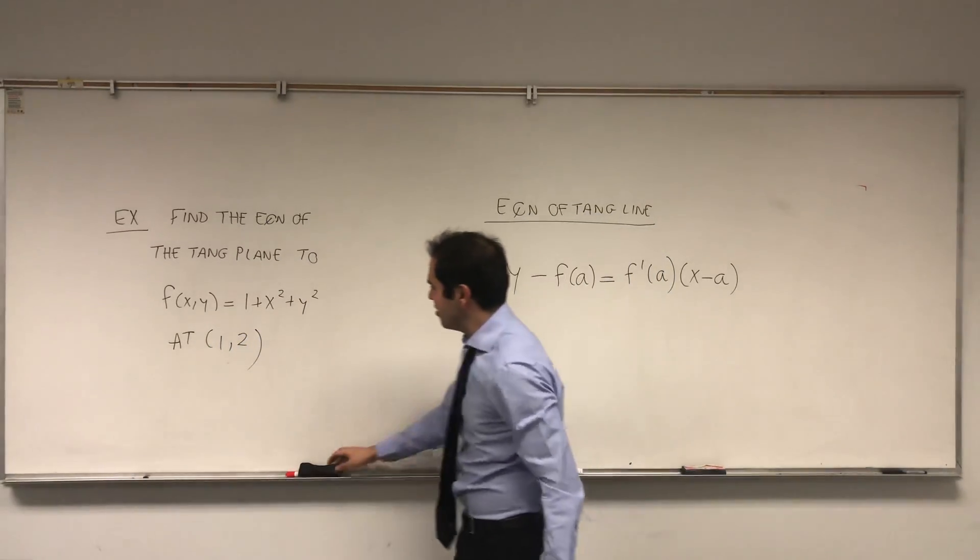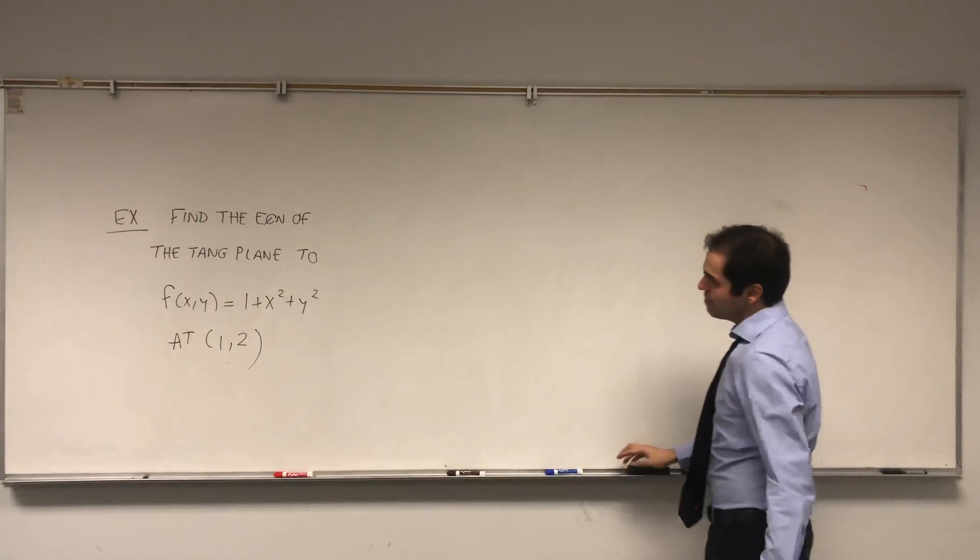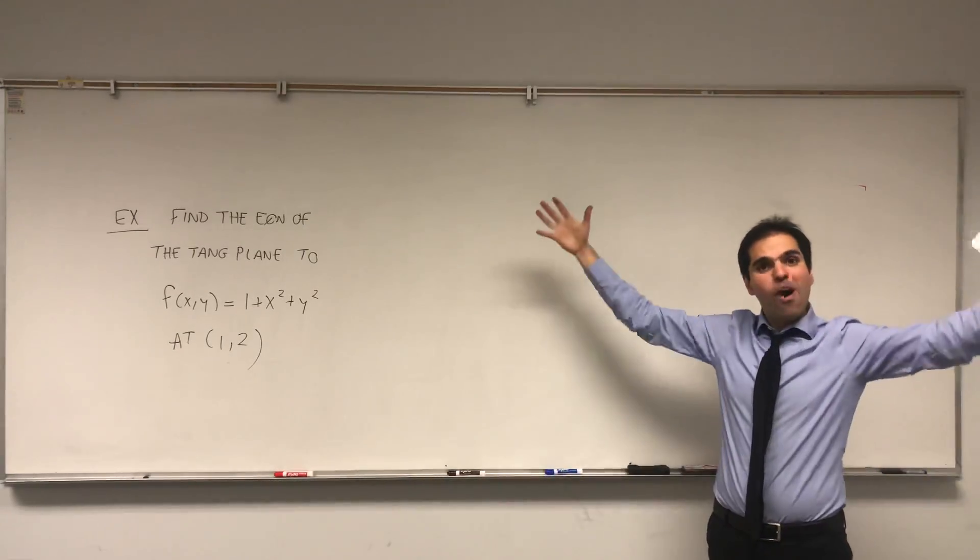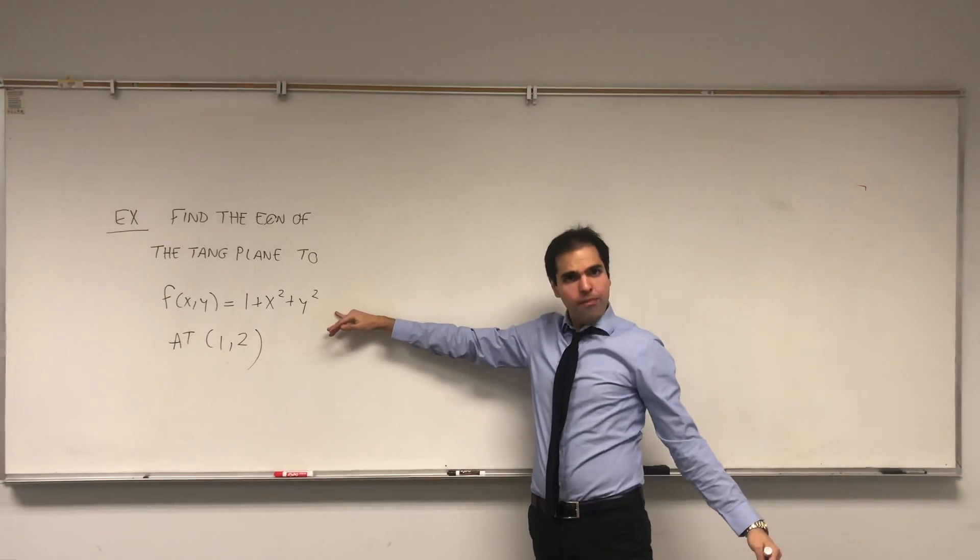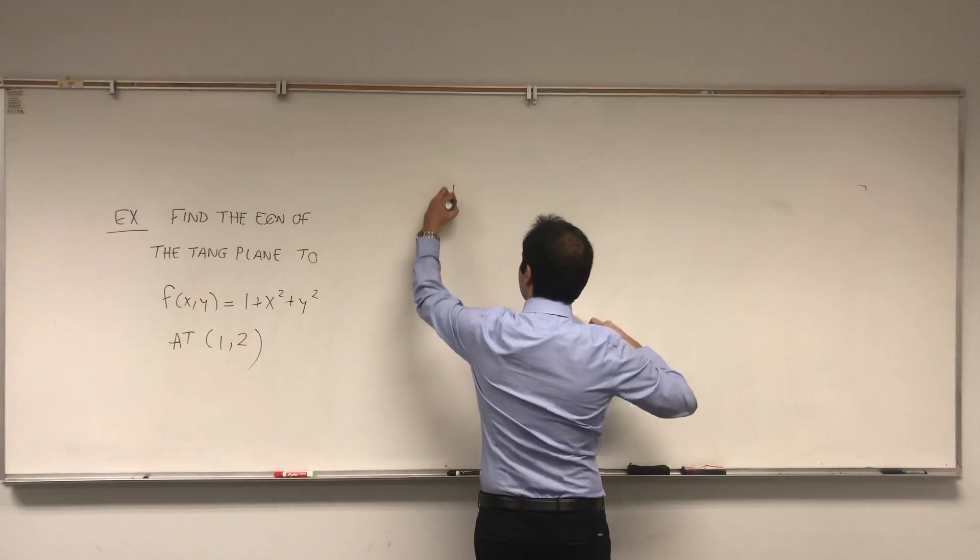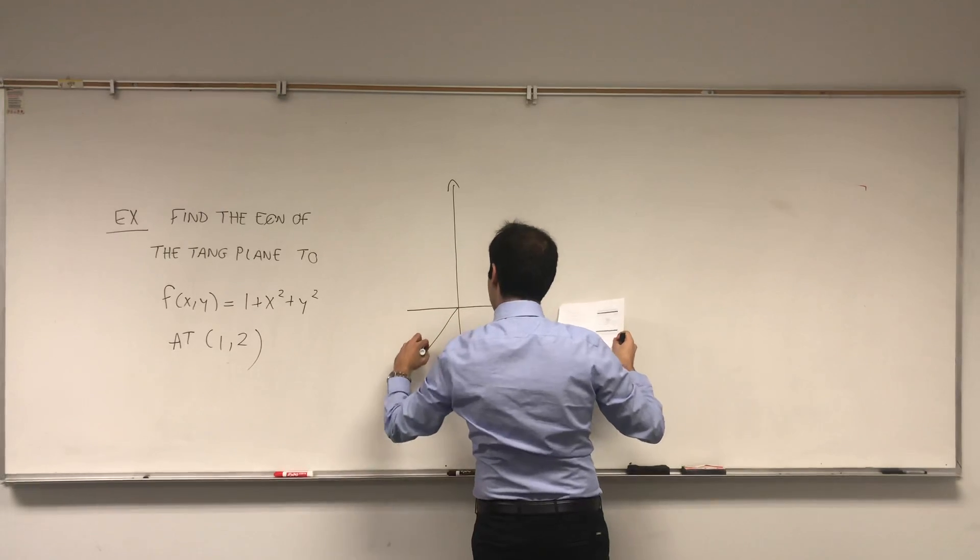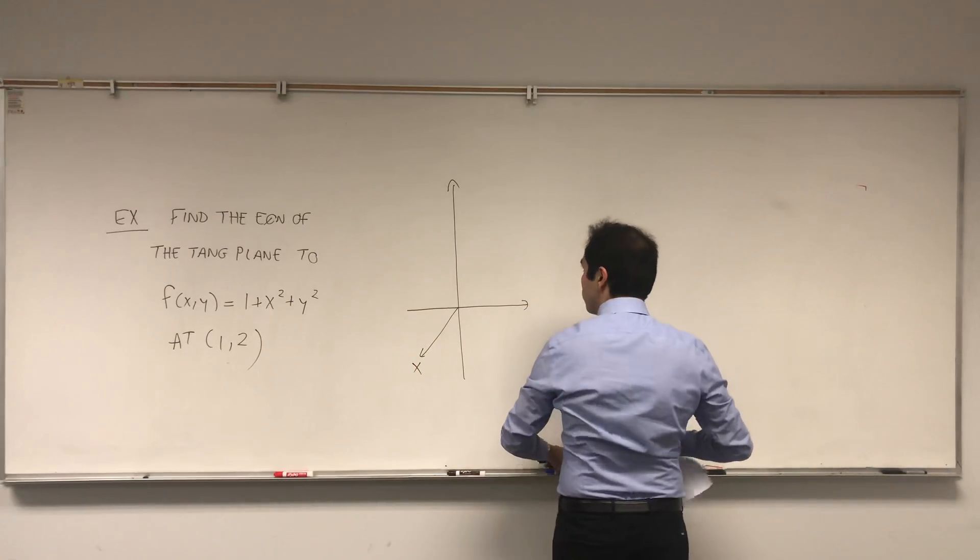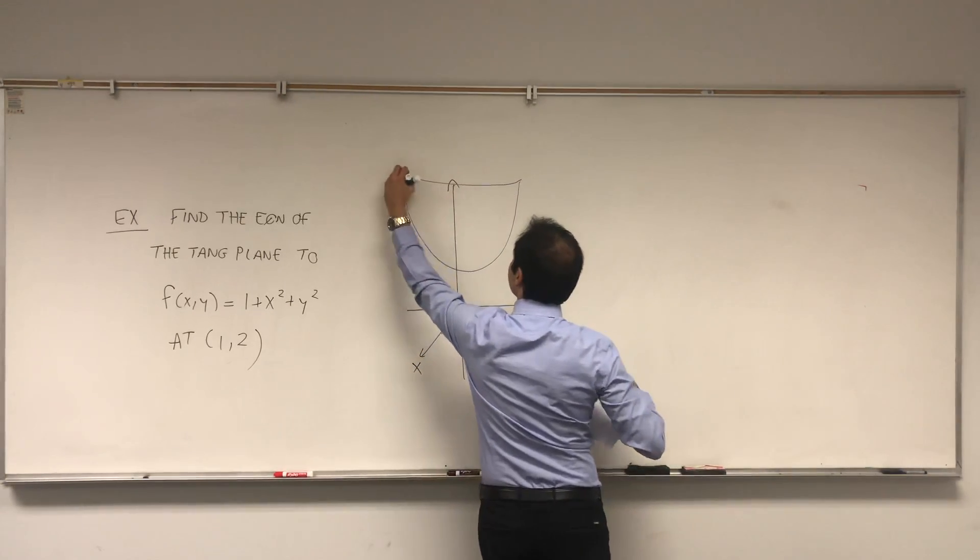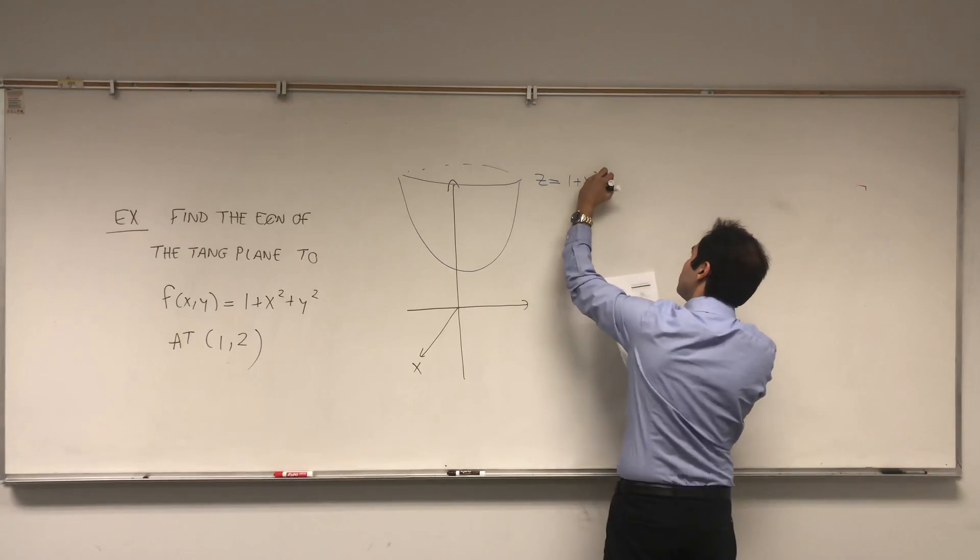So let me first draw a picture. And then I will explain what this tangent plane is. So, f(x,y) is like a parabola. Think like y equals x squared, except a three-dimensional version of it. And you shift it up by one point. So it becomes something like that here in the x, y, z plane. So that's what's called an elliptic paraboloid, just a nice generalization of the parabola.